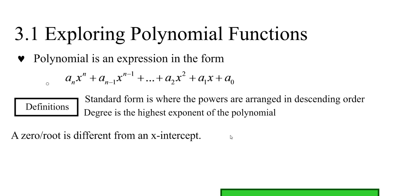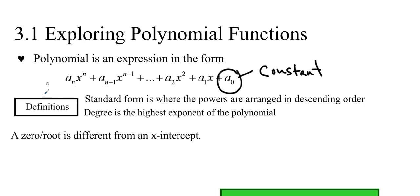A polynomial is an expression in this form: a sub n times x to the n, plus a sub n minus 1 times x to the n minus 1, and so forth, all the way down to a nought, which is a constant term with no x's involved. So a polynomial is really just all these terms with x to the power of something all added together. And standard form is when the powers are arranged in descending order.